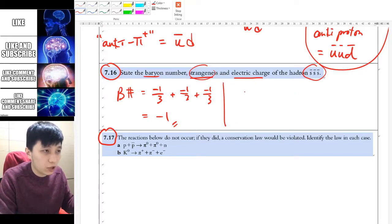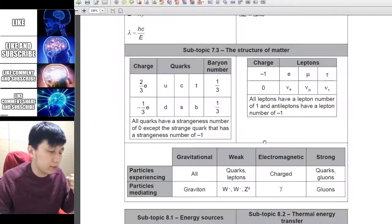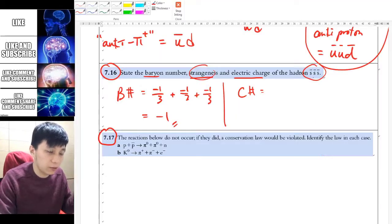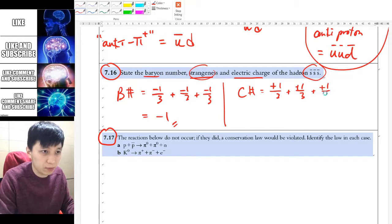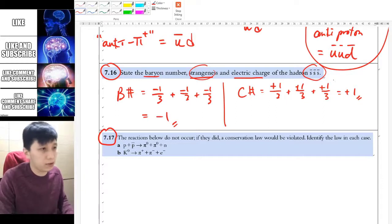As for charge number, let's do it first, which is something you should know. Go back and check the data table. The regular strange quark is negative 1/3, so for this one it's positive 1/3. Then you just add them together. You can multiply by 3, but I like to write it this way, which is clear to see. So charge number is positive 1.